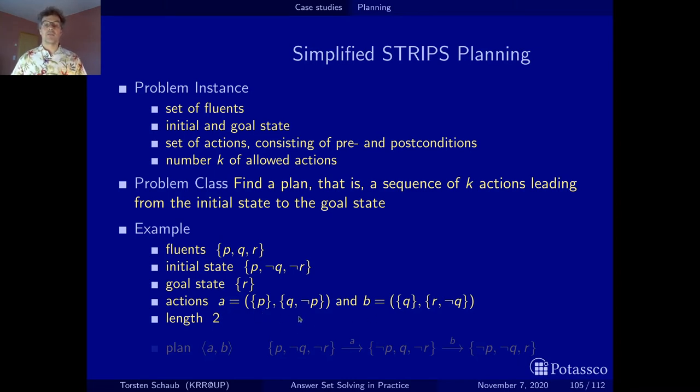Now, action a has precondition p and effect q and not p. Actually, in STRIPS, positive effects were said to be on the add list and negative ones were said to be on the delete list. And I will actually use this add and delete terminology also in the encoding. And now action b. To execute action b, q must be true. And then r is made true and q is made false afterwards. So actually, both of these actions consume their precondition here. p must be true to execute action a, and then it is deleted. And the same with q here. Then, as I said, we have to bound the length of our plans. Here I do this just with two. I want a plan of length two. And actually, here we find one. This is the plan that we can use to get from the initial state to a state where r is true. We first execute action a and then we execute action b.